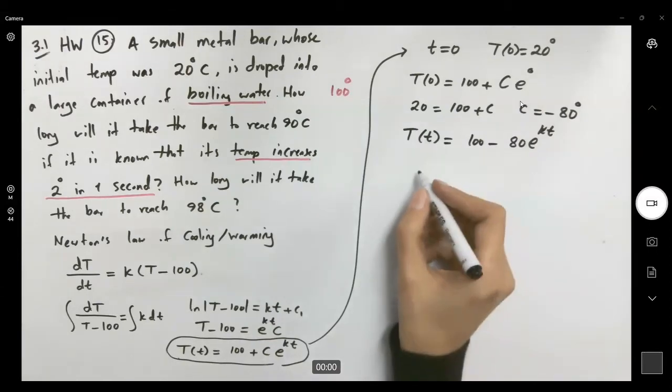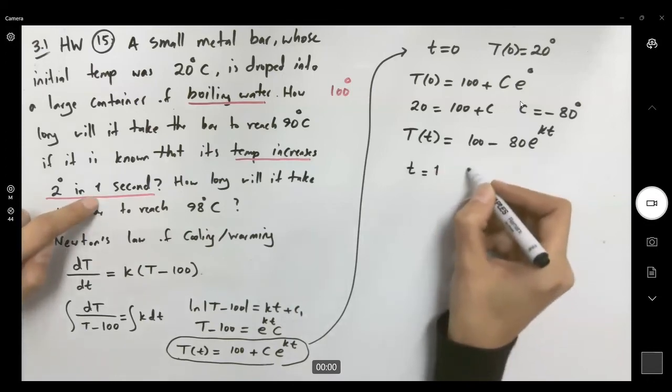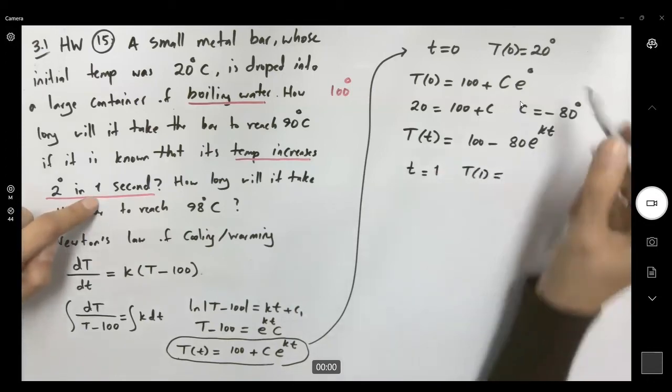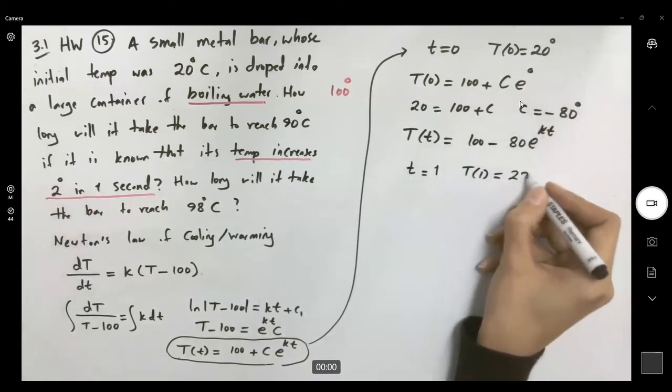So when t is just 1, t of 1, 20 plus 2 becomes 22 degrees.